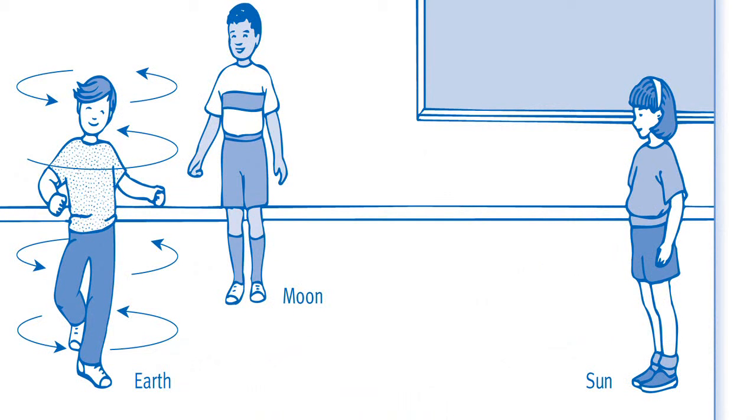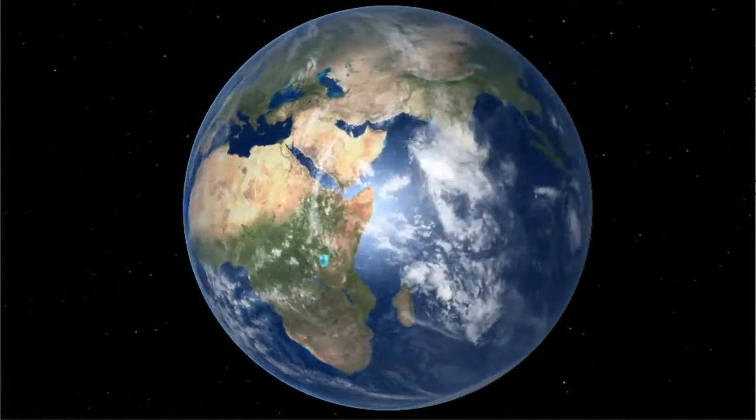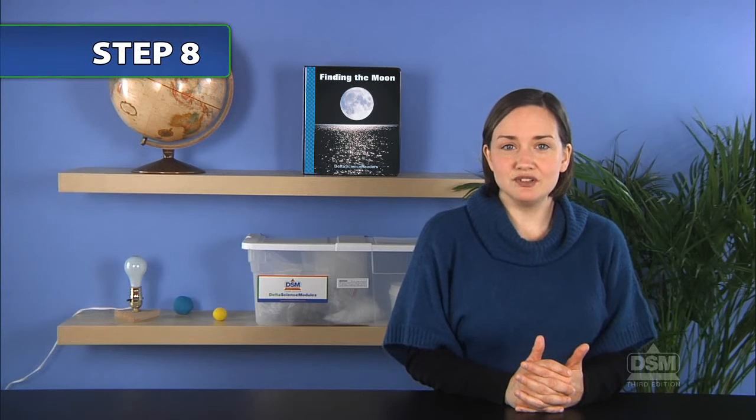Have students work in groups of three to model moonrise and moonset. First, have the student playing the sun stand a distance away from the students playing Earth and the moon. Then, have the student playing the moon stand between the students playing the sun and Earth, but off to one side. Instruct Earth to begin turning around in place, to simulate the rotation of Earth on its axis. Ask students: What happens every time Earth turns around? Guide students to understand that both the moon and sun disappear from Earth's sight, then reappear again. Have students switch roles so that all students have an opportunity to observe this. Next, tell students that, like the sun, the moon appears to rise and set in the sky. And like sunrise and sunset, moonrise and moonset are caused by the turning of Earth, not by the movement of the moon.